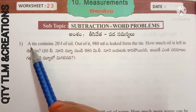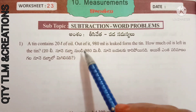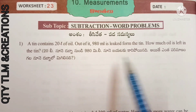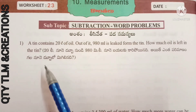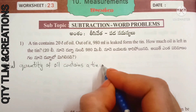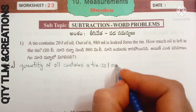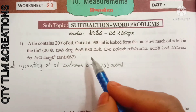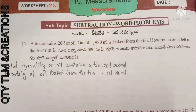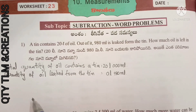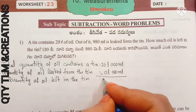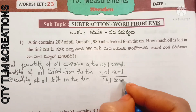First question: a tin contains 20 liters of oil. Out of it, 980 milliliters is leaked from the tin. How much oil is left in the tin? Total quantity: tin contains 20 liters of oil. Quantity of oil leaked from the tin equals 900 milliliters. Quantity of oil left in the tin equals 19 liters 20 milliliters.